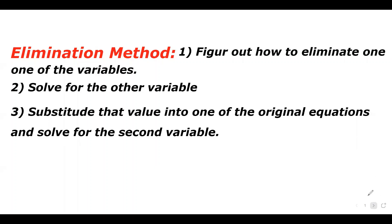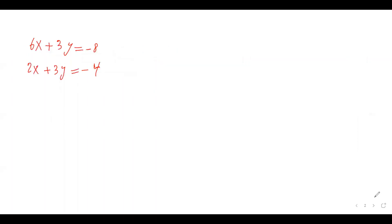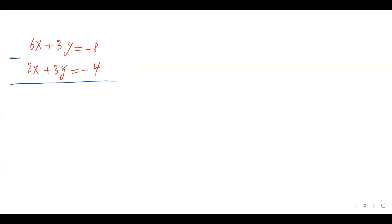I'm going to explain this while doing two examples. Here is the first one — I have this linear system with two linear equations and I want to solve by elimination. So the first thing we need to do is figure out how to get rid of one of these variables. As you can see, I have x and y variables, but the y variable has the same coefficient — I have 3y and 3y in both equations, and the signs of those two terms are the same.